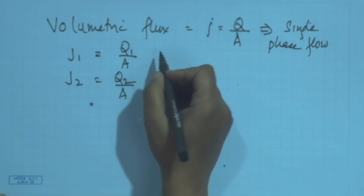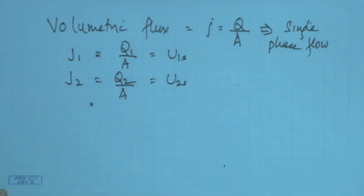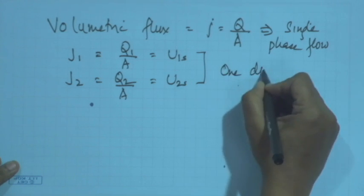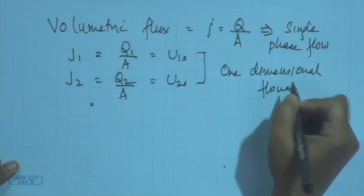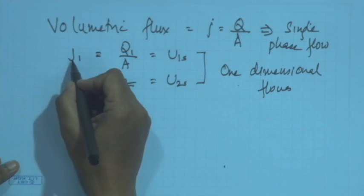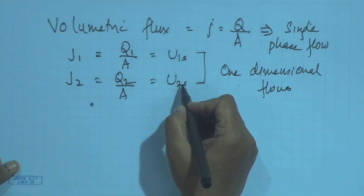A very common question I face while teaching the drift flux model is that the mathematical expression of j1 is the same as the superficial velocity. In superficial velocity I had said the velocity which the fluid would have had it flowed alone in the pipe. Mathematically this is a similar expression to u2s, but these equalities are applicable only for one-dimensional flows. When there is a temporal or spatial variation of velocity, j1 and j2 vary across the cross section, but u1s and u2s are inlet velocities and remain constant.